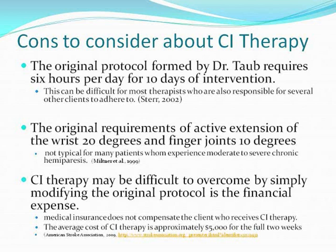The original requirements of active extension of the wrist 20 degrees and finger joints 10 degrees are not typical for many patients who experience moderate to severe chronic hemiparesis. However, beneficial outcomes have been observed in studies which applied modified CI therapy to participants with much less active extension than the original criteria required.